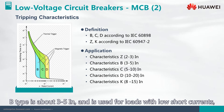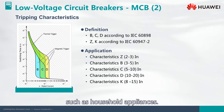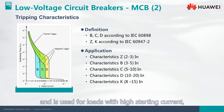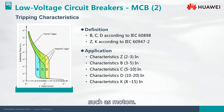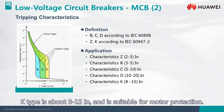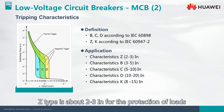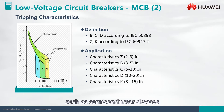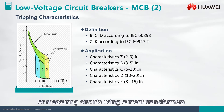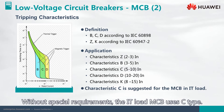B type is about 3 to 5 times rated current, used for loads with low short-circuit currents such as household appliances. D type is about 10 to 20 times rated current, used for loads with high starting current such as motors. K type is about 8 to 15 times rated current and is suitable for motor protection, with thermal tripping starting at 1.2 times rated current. Z type is about 2 to 3 times rated current, for protection of loads such as semiconductor devices or measuring circuits using current transformers. Without special requirements, for IT loads, MCB uses C type.